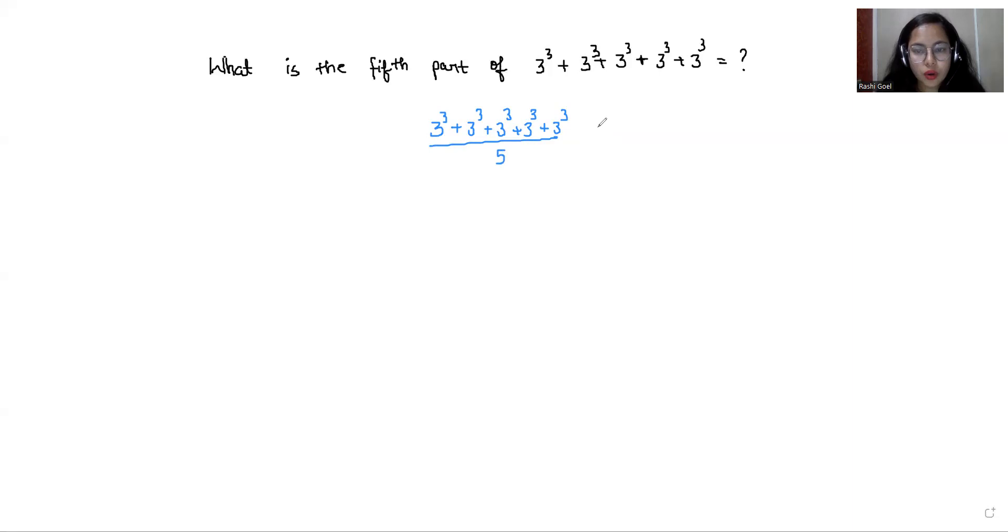Because there are 5 terms and I can also write that the 3 power 3 is repeated 5 times. So I can write it as 5 times of 3 power 3 over 5.